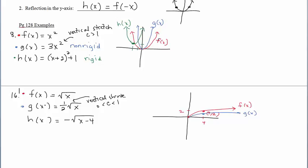The last function has a reflection — a rigid transformation — and a shift right, which is also a rigid transformation. Compared to the previous blue graph that distorted the shape (non-rigid), these are both rigid. We shift the parent function right 4 (because the minus 4 is with the x under the radical) and then reflect it, so the graph ends up opening in the opposite direction. That's two rigid transformations.